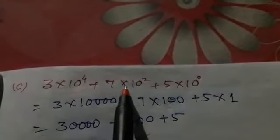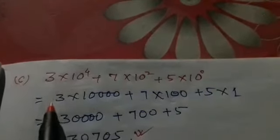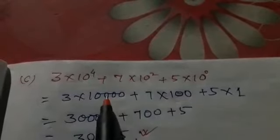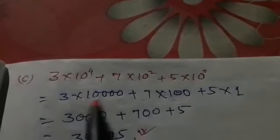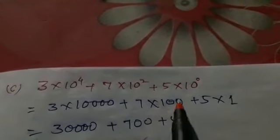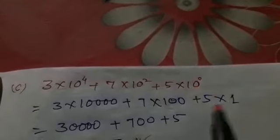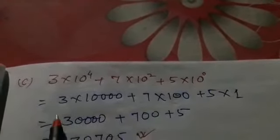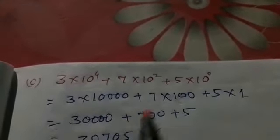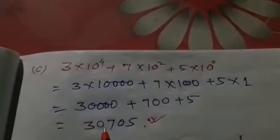The third problem is 3 × 10 to the power 4 plus 7 × 10 squared plus 5 × 10 to the power 0. Here, 3 × 10 to the power 4 is ten thousand — so ones, tens, hundreds, thousands, ten thousands. Plus 7 × 10 squared means one hundred. Plus 5 × 1. We simplify: 3 × 10,000 equals 30,000, plus 700, plus 5. After adding, we find thirty thousand seven hundred and five.